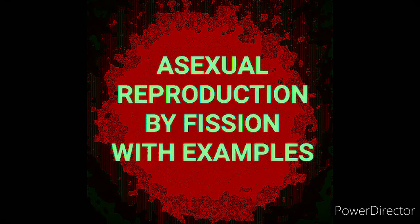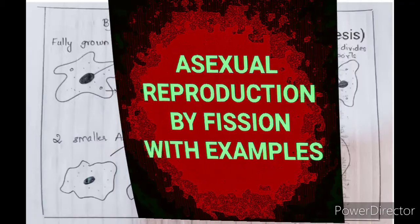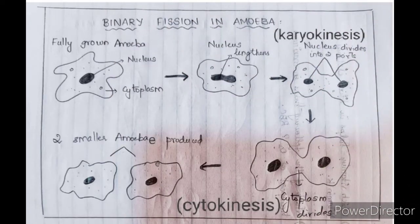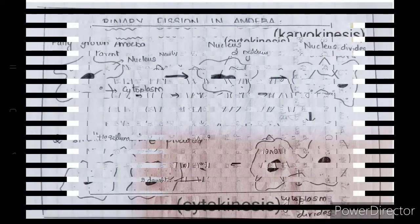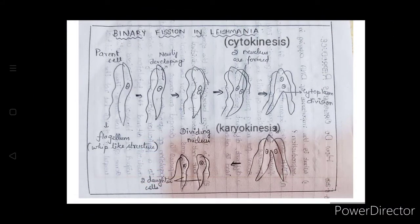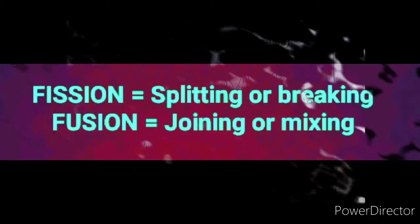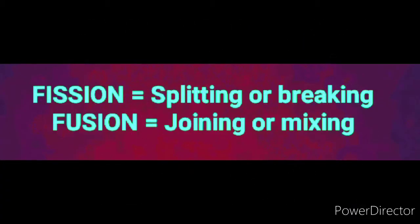Hi everyone. Now I am going to explain the methods involved in asexual reproduction in different organisms such as unicellular and multicellular organisms. In unicellular organisms — examples include bacteria, amoeba, leishmania, etc. — fission, or breaking, is a common method of asexual reproduction.